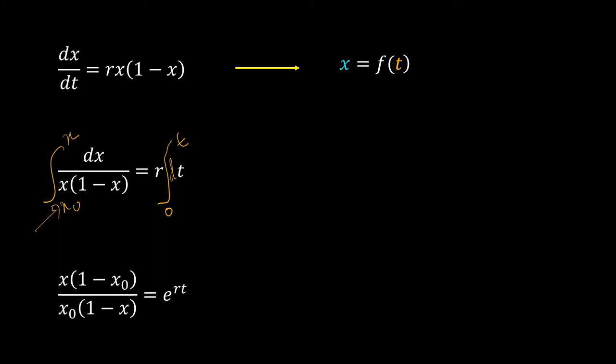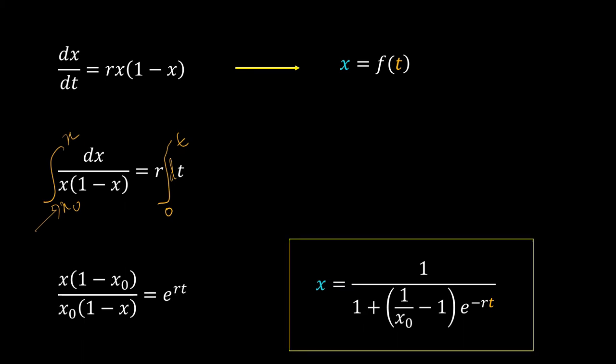We will rearrange these terms here so that I can separate out x and keep everything else on the right-hand side. On doing so, I get this function here. This is my function of time, x as a function of time. So starting with this ODE, I have reached to this where I have got x as a function of time.